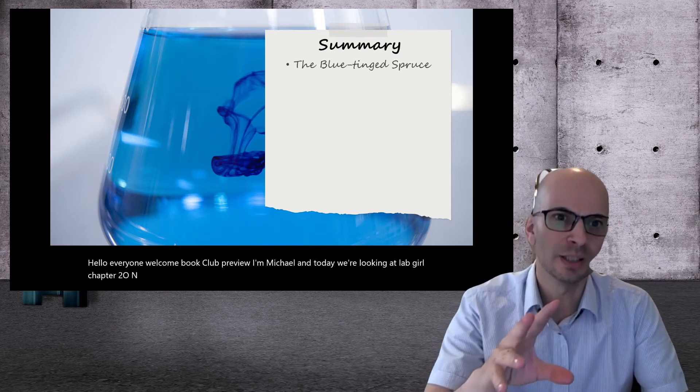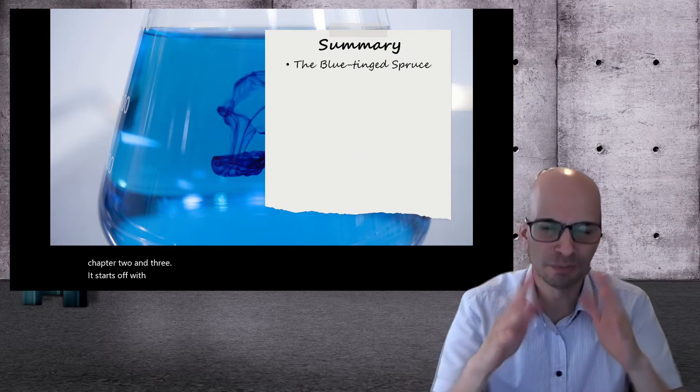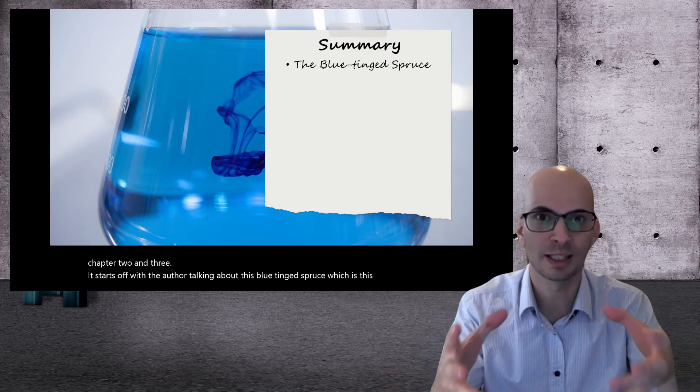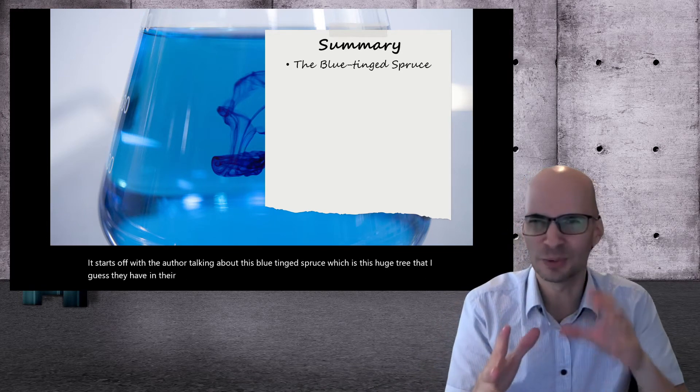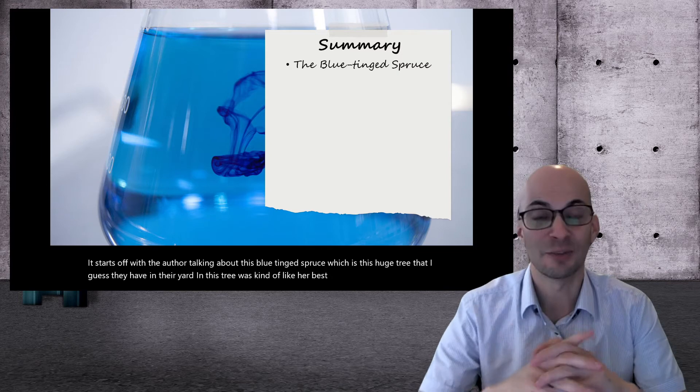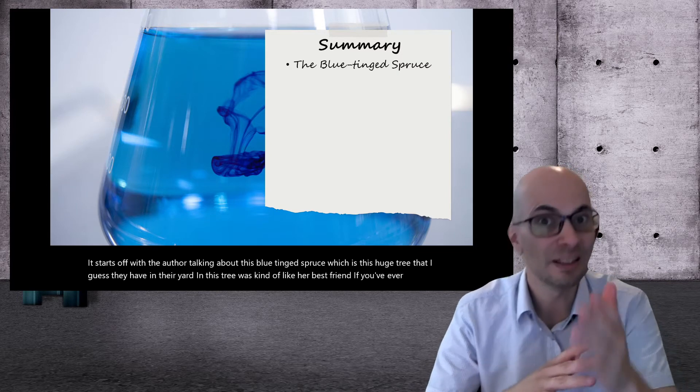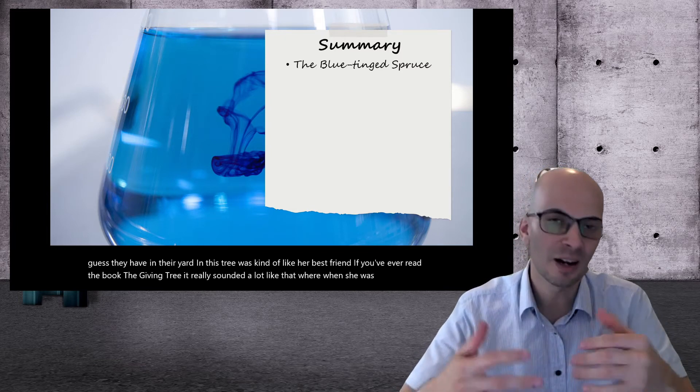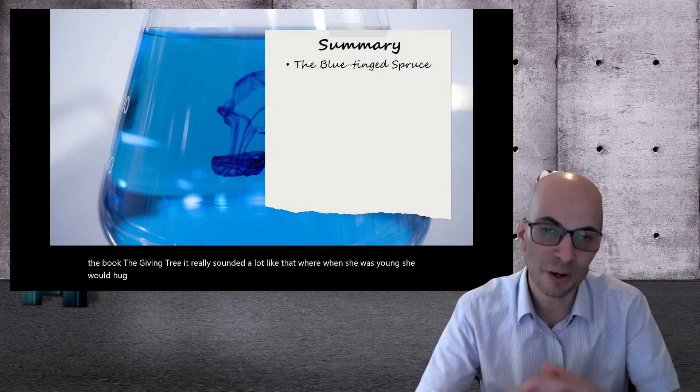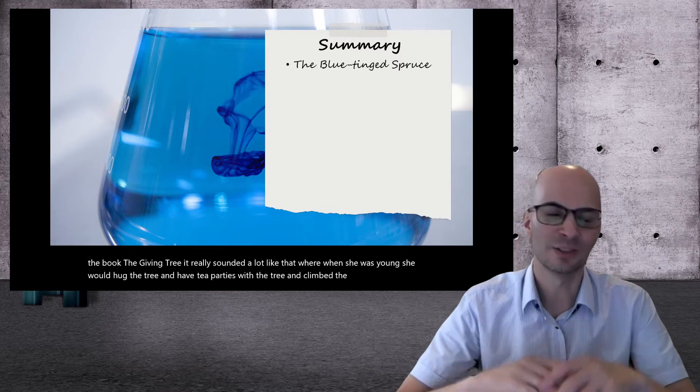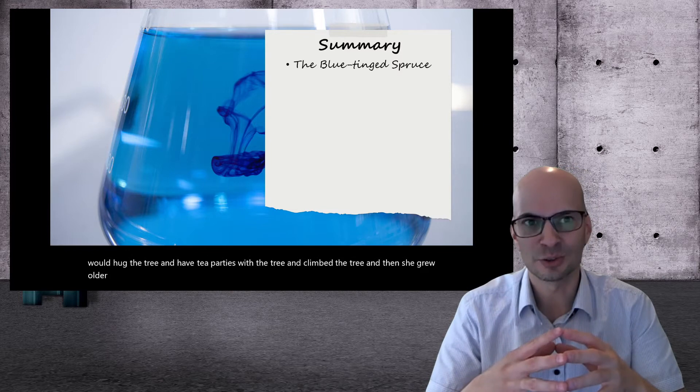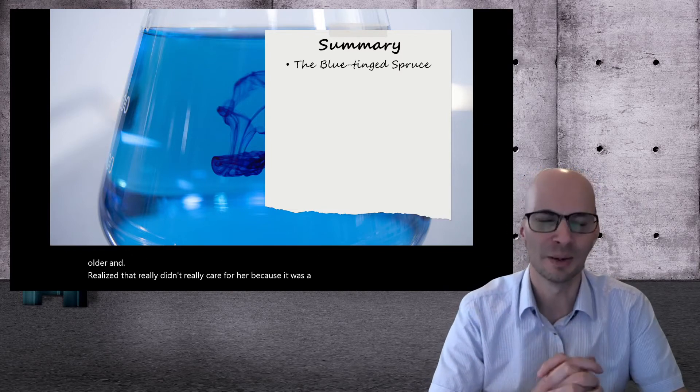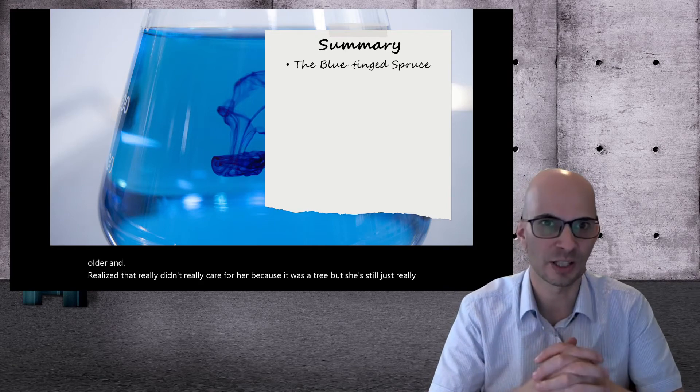It starts off with the author talking about this blue-tinged spruce, which is this huge tree that they have in their yard. And this tree was kind of like her best friend. If you've ever read the book The Giving Tree, it really sounded a lot like that, where when she was young, she would hug the tree and have tea parties with the tree and climb the tree. And then she grew older and realized the tree didn't really care for her because it was a tree. But she still just really loved this tree and had a really special connection to it.